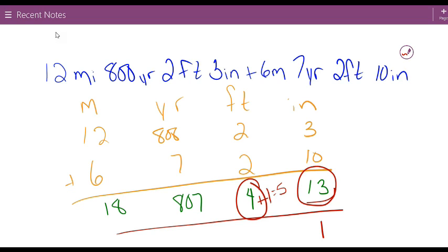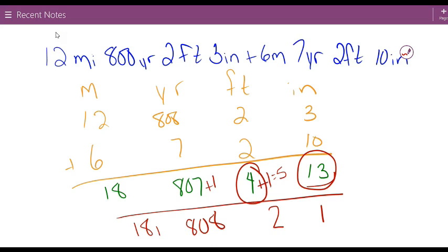But we know that 3 feet gives us a yard, so we're going to take 3 feet away, leaving 2, and put that other yard over here. Now 808—still have plenty of room for yards before we get over into miles—so 18. Our final answer is 18 miles 808 yards 2 feet and 1 inch.